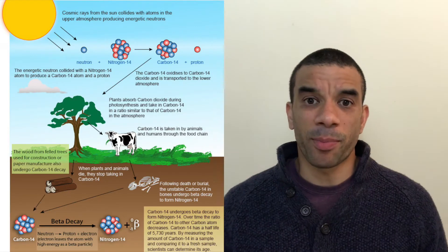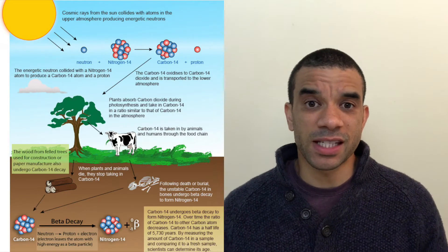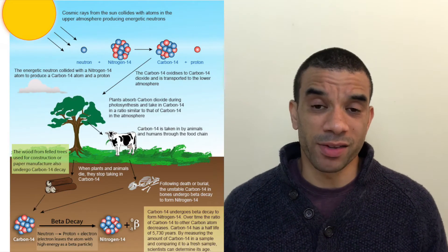Next is radiocarbon dating. This is based around a radiocarbon isotope called carbon-14. An isotope is just a different form of an atom with a different number of neutrons but the same number of protons. So normally we have carbon-12; this is carbon-14. It's taken up by plants in photosynthesis and incorporated into plant tissues.